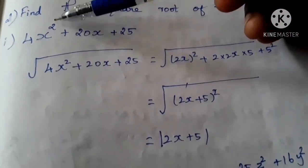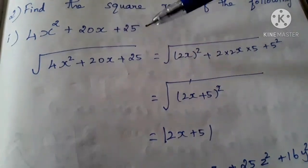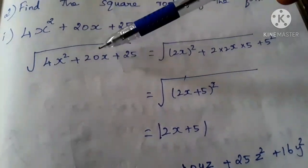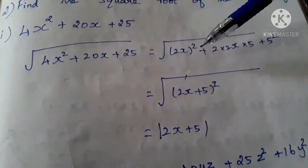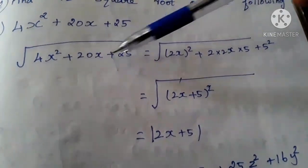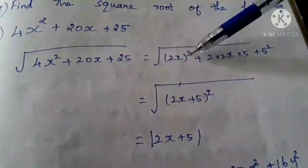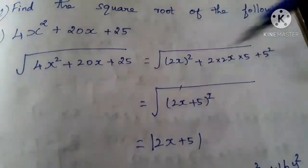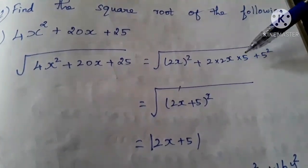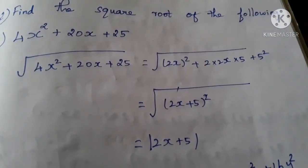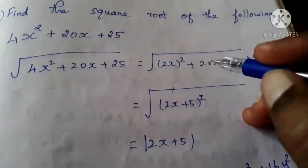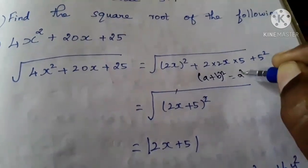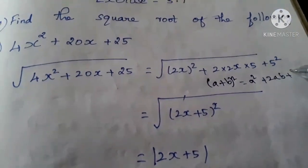See, the first question: 4x² + 20x + 25. We have to find the square root. We can factorize, or we can use the formulas. When you see this, you can identify that 4x² we can write as (2x)². Here 25 we can write as 5². And here I written 2 × 2x × 5. You know that formula: (a + b)² = a² + 2ab + b².